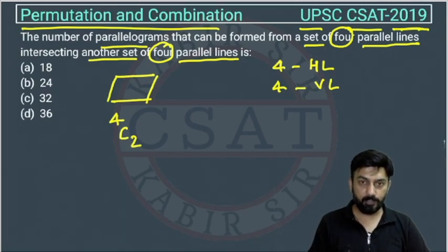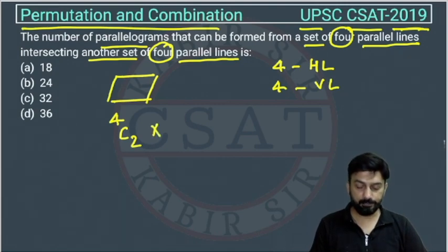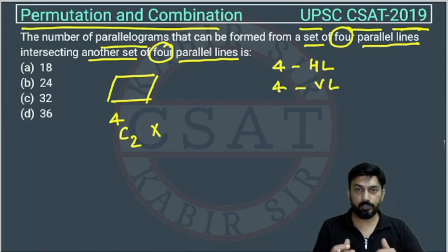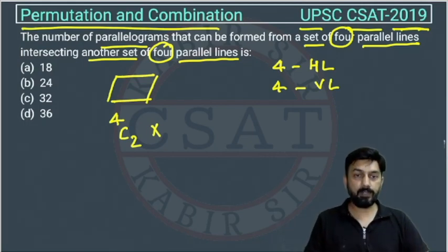We have selected horizontal lines. Now we will select vertical lines. Out of four vertical lines, multiplication will come because 4C2 will select the horizontal line but still vertical lines are remaining.